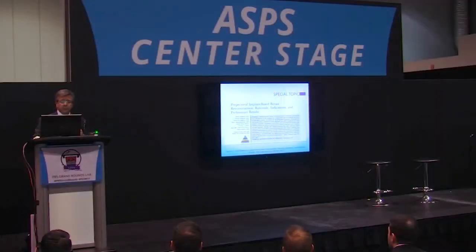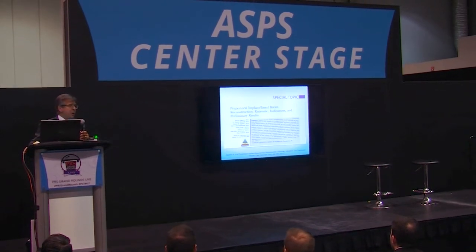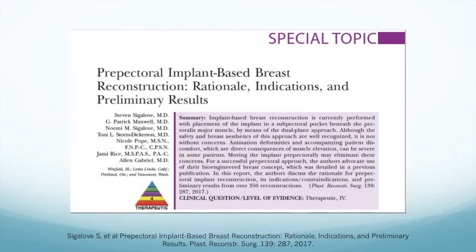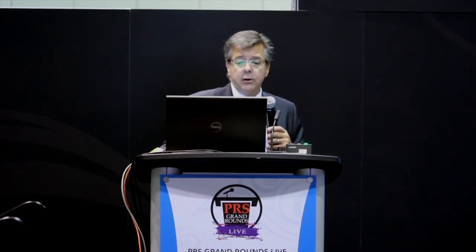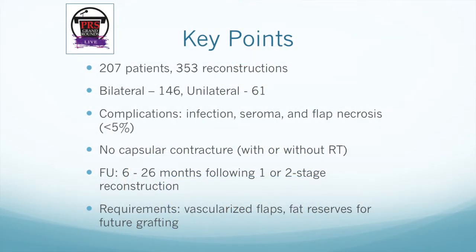Looking at recent PRS manuscripts, the first was by Steve Sigilov — one of the pioneers, probably having done more pre-pectoral in the US than anyone, up to four or five hundred cases. Co-authored by Pat Maxwell and Naomi Sigilov, with 353 reconstructions, the majority bilateral. Overall complication rates related to infection, seroma, and flap necrosis were less than five percent. Patient selection is important — thin skin flaps are a concern. They also didn't really see capsular contracture, which redefines what we call capsular contracture, since most implant tightening was really a muscle effect rather than a true capsule effect.